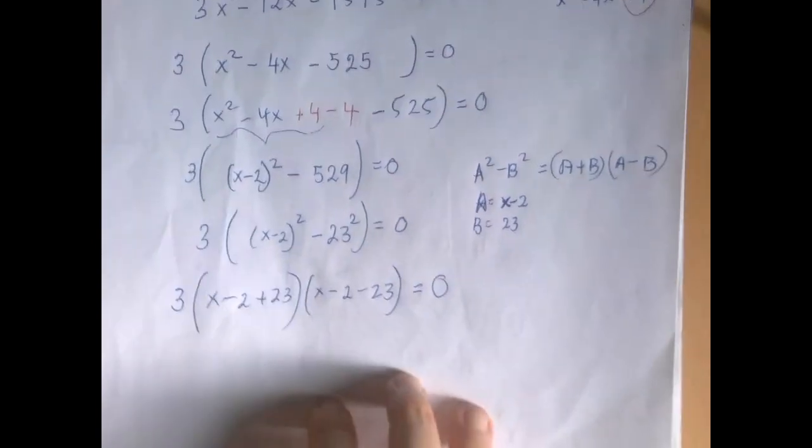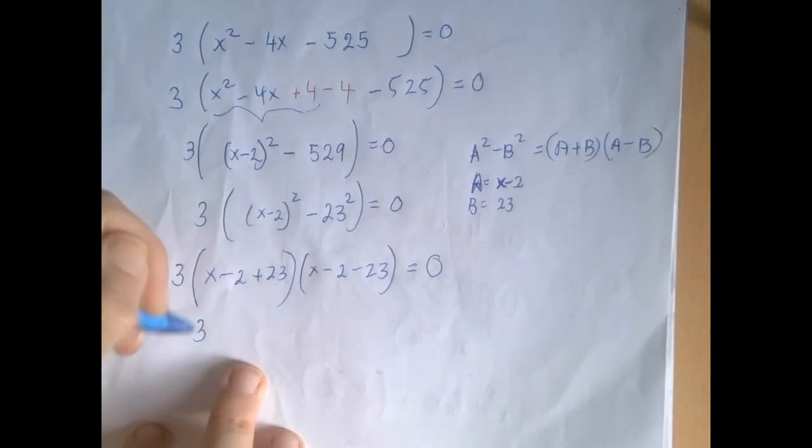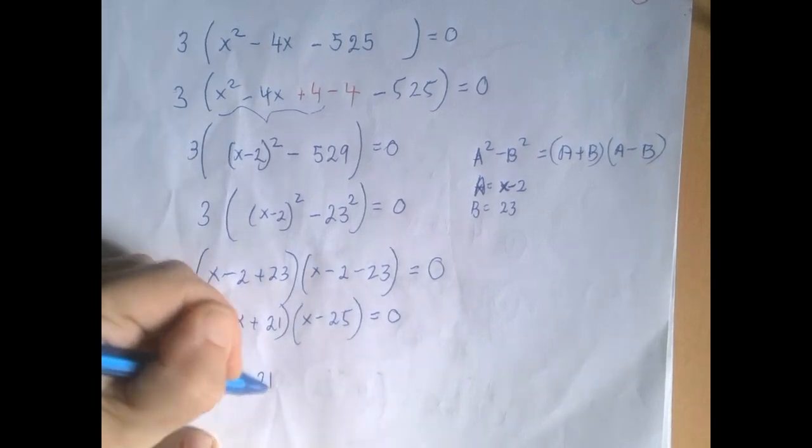Okay. So now we're almost done. We're just going to clean up the factors by combining like terms. We have x plus 21 times x minus 25. So there are two solutions, negative 21 and 25.